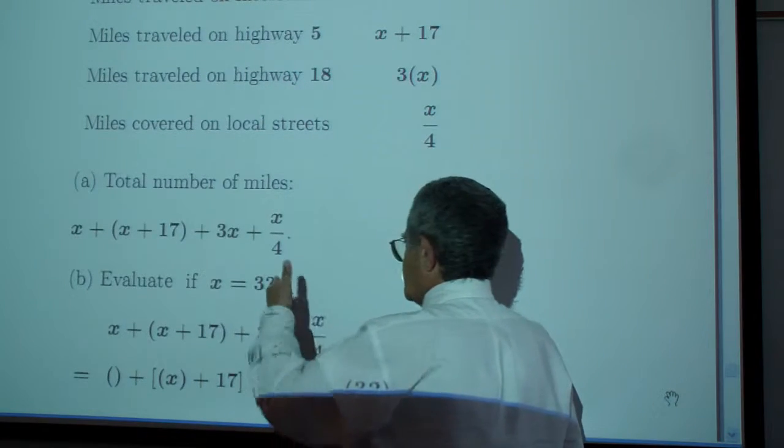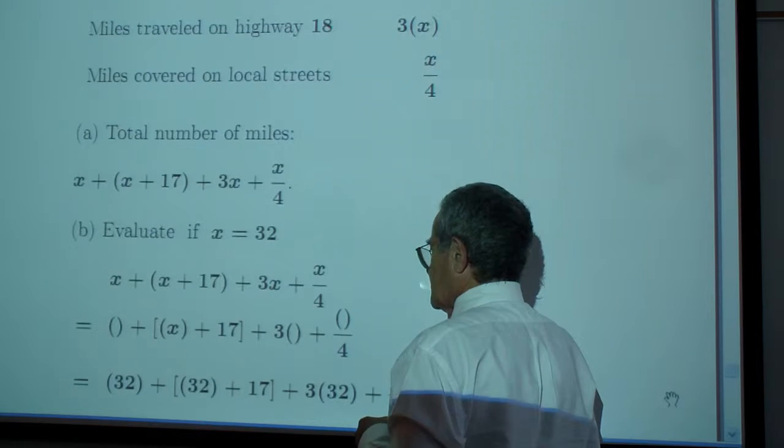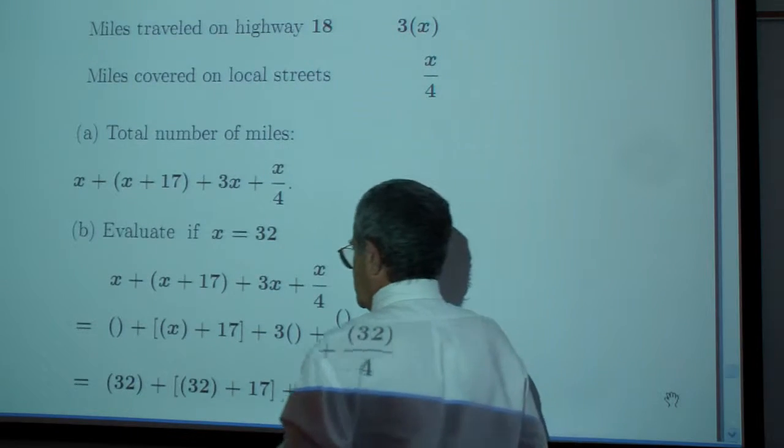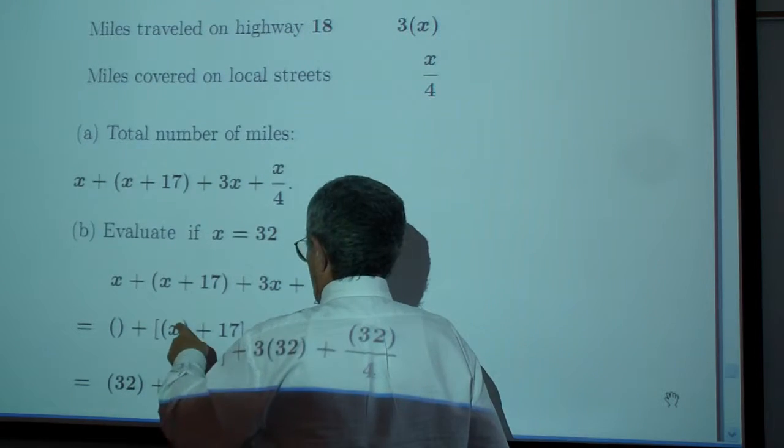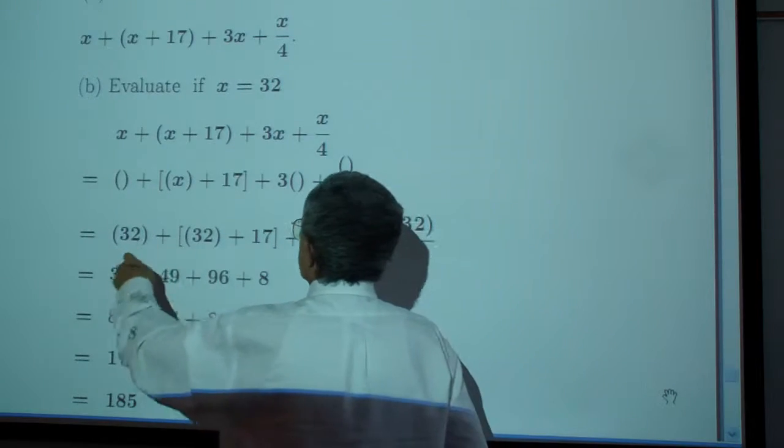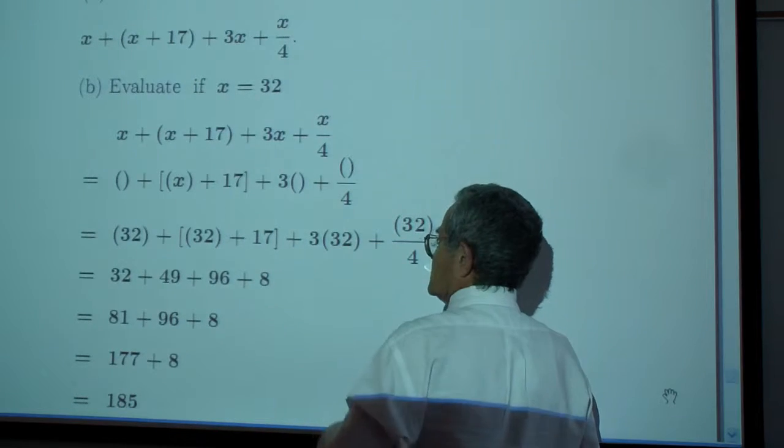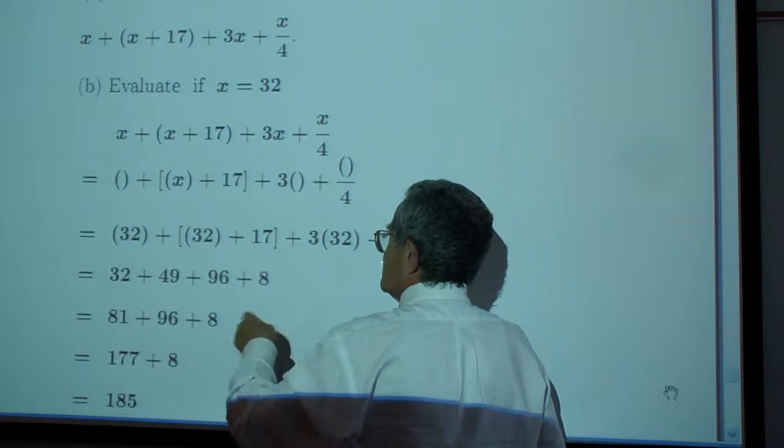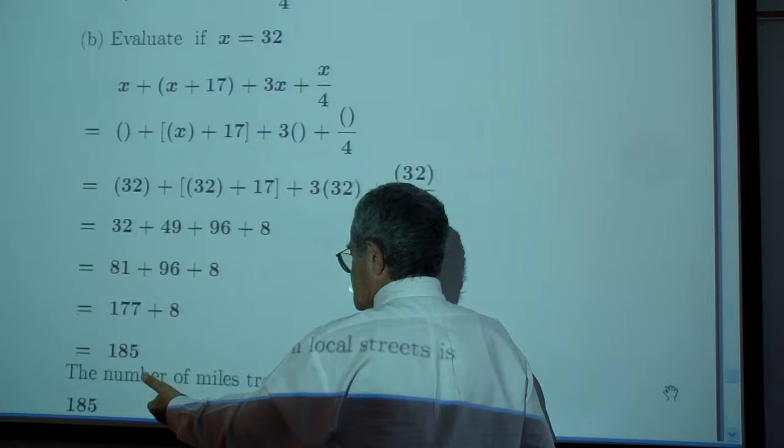But what I did is I plugged in 32. There is a 32 that should be here, the x shouldn't be in there. And then I populate - I put in 32, 32, 32, 32, and 32. I do the arithmetic and I'm supposed to come out with 185.